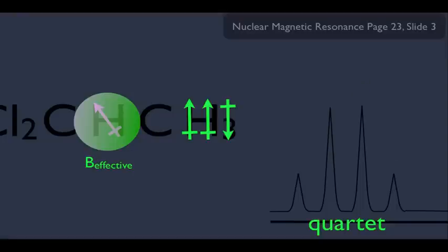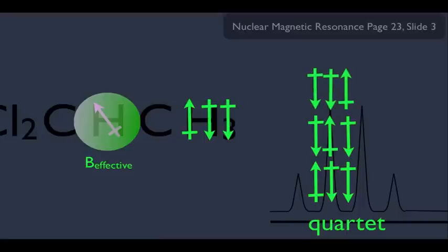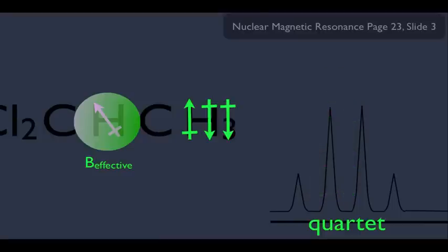Taking the logic further: instead of two up and one down, it could be two down and one up, which also has three possible arrangements. Because there are three, the height of this peak matches the second peak. Finally, all three A hydrogens pointing downward has only one possible arrangement — so the last peak has a relative height of one, which is one third of the two middle peaks. This explains the 1:3:3:1 ratio of the quartet.